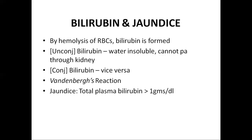For the understanding of jaundice, you must know the normal value of bilirubin in the blood, that is 1 mg per deciliter. Whenever the plasma level of bilirubin rises more than 1 mg per deciliter, it will lead to the condition called jaundice.